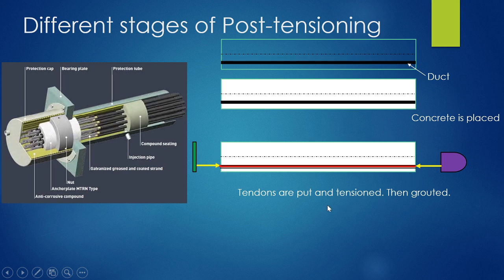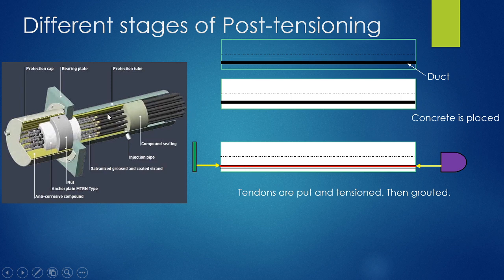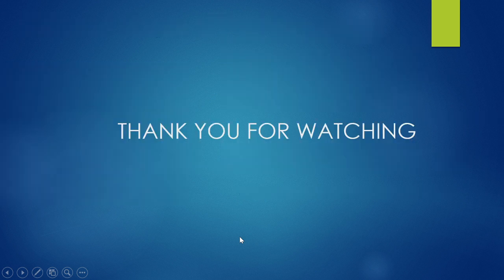The duct provides protection, and there is a bearing plate at the end through which the strands pass. The tendons are anchored at the ends as seen in the pictures, and inside, after sufficient tension is applied, the spaces are grouted. That is all for today, thank you for watching.